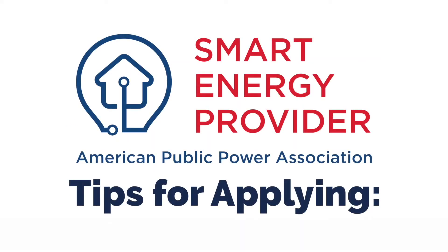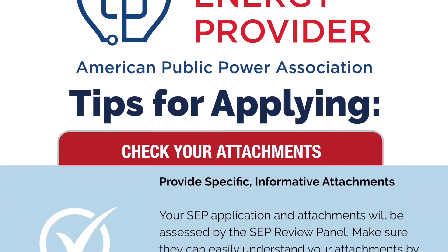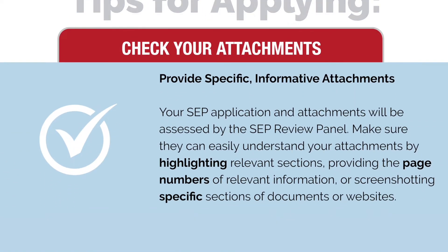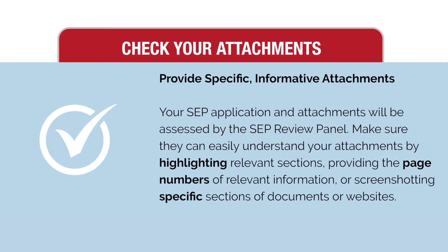This video will go over a few tips for applying to the Smart Energy Provider program. First, make sure you're providing specific attachments. Ask yourself, would someone with no knowledge of my utility be able to find what they need from this? If an attachment is lengthy, show the application reviewers where they can find relevant information.